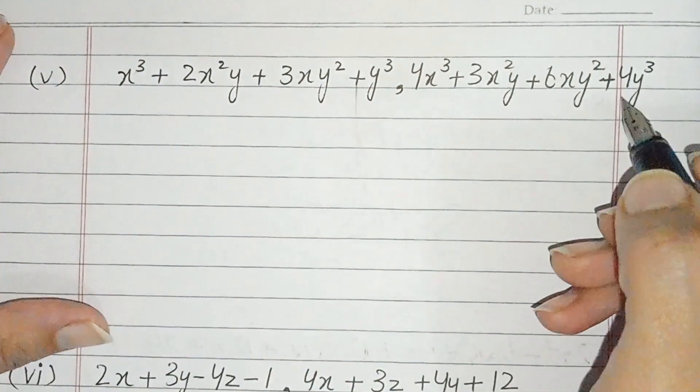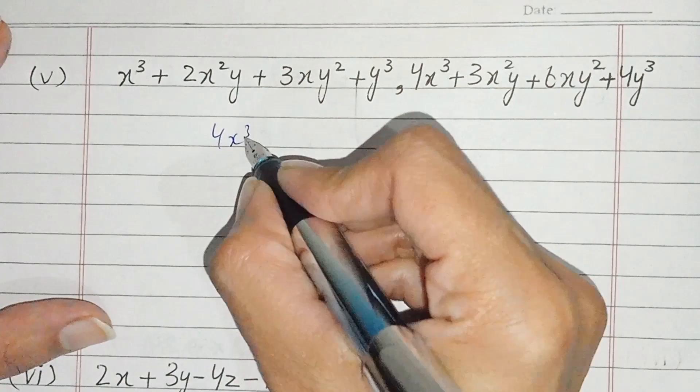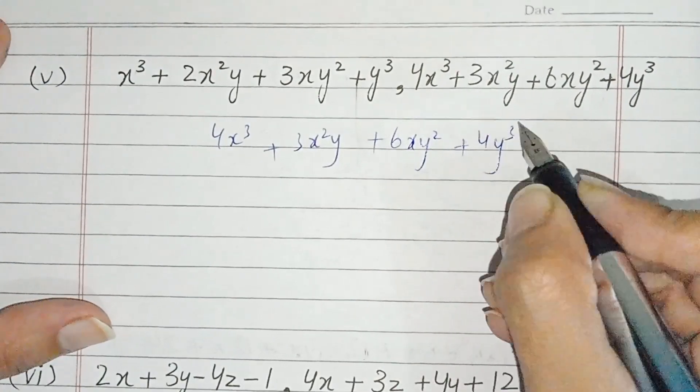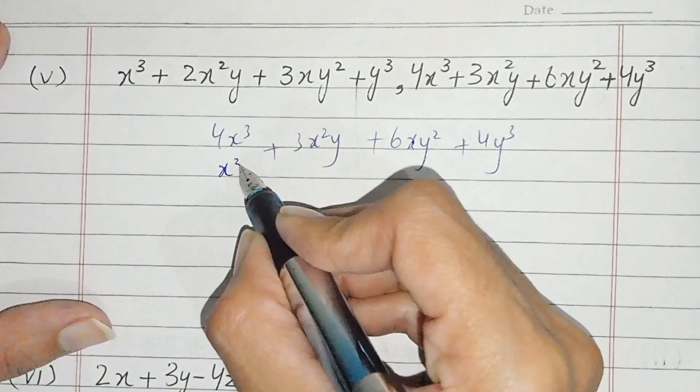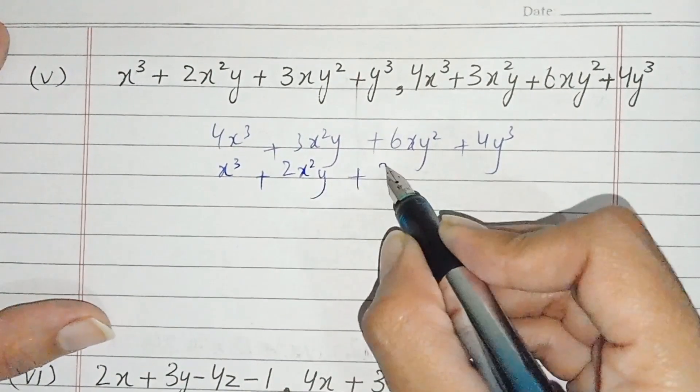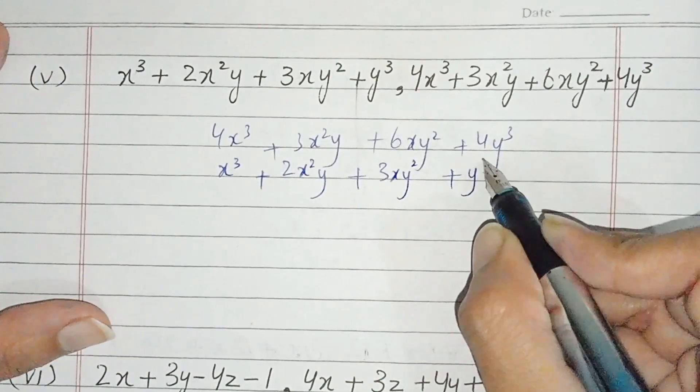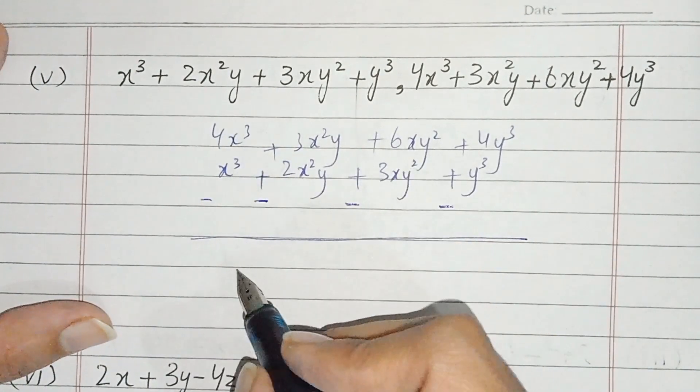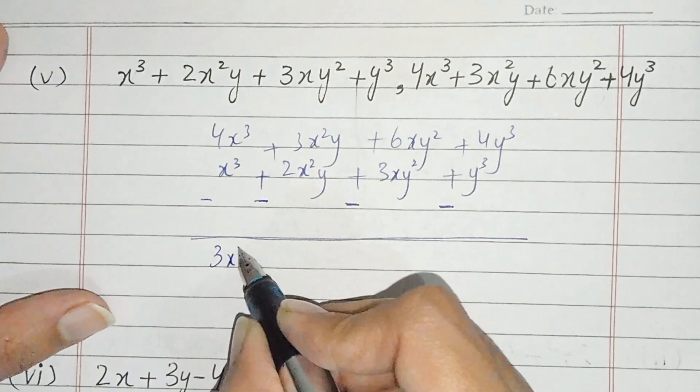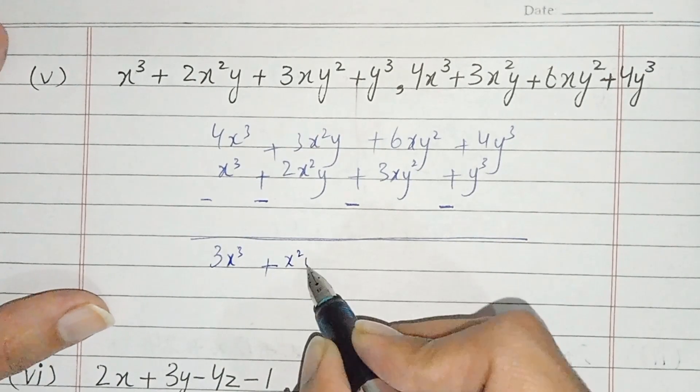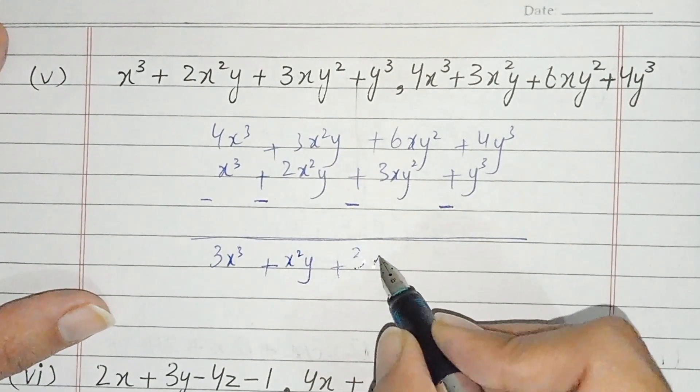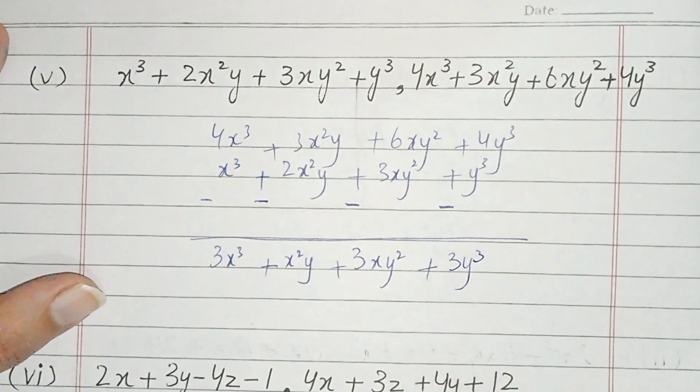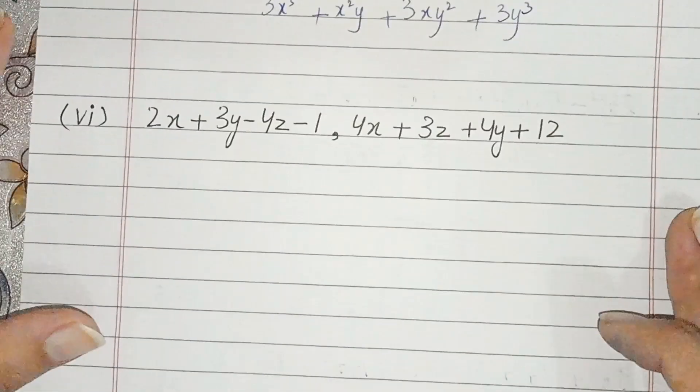Now part number 5. This is our second polynomial we write down: 4x cube plus 3x square y plus 6xy square plus 4y cube. 1 change, change. 5, 4, 3 minus 3, minus. Minus we get x square y, minus 3xy square, and this is 3y cube. This was part 5.